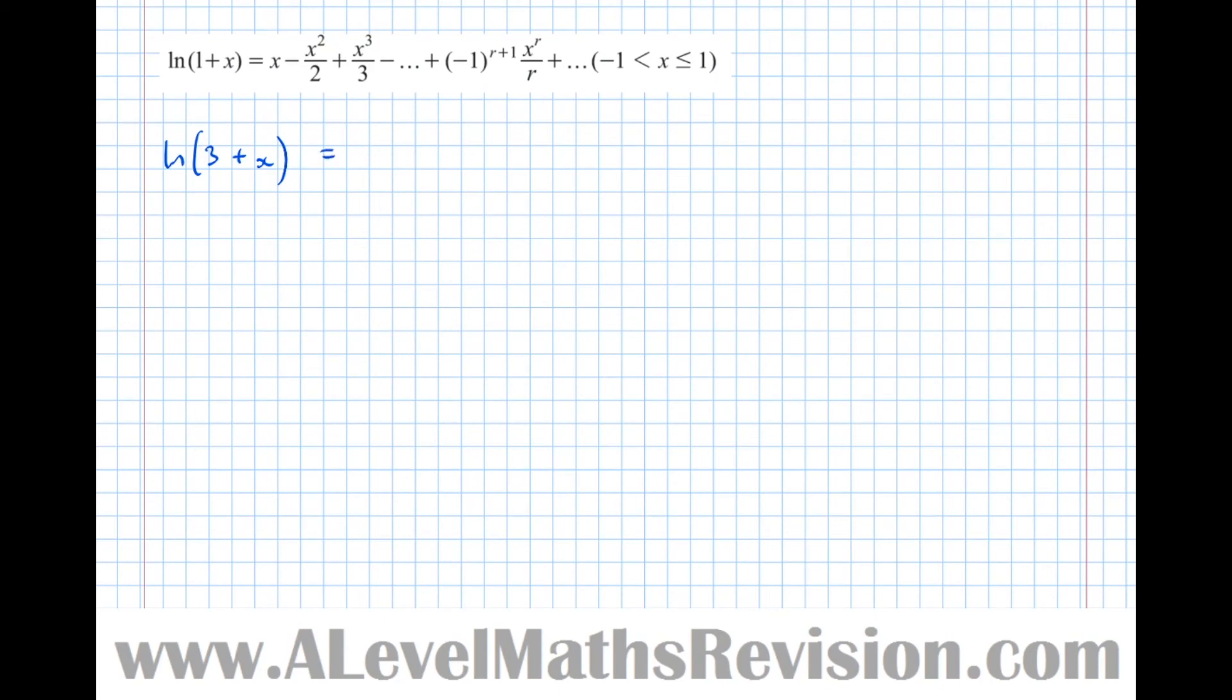So equals log, and let's take out a factor of 3, so that becomes 1 plus 1 third x. Like that. And now we can use log laws to separate that out, so it's a multiplication. Equals log 3 plus log of 1 plus 1 third x. And now we've got something that has a 1 plus at the front. Therefore, we can work with it.